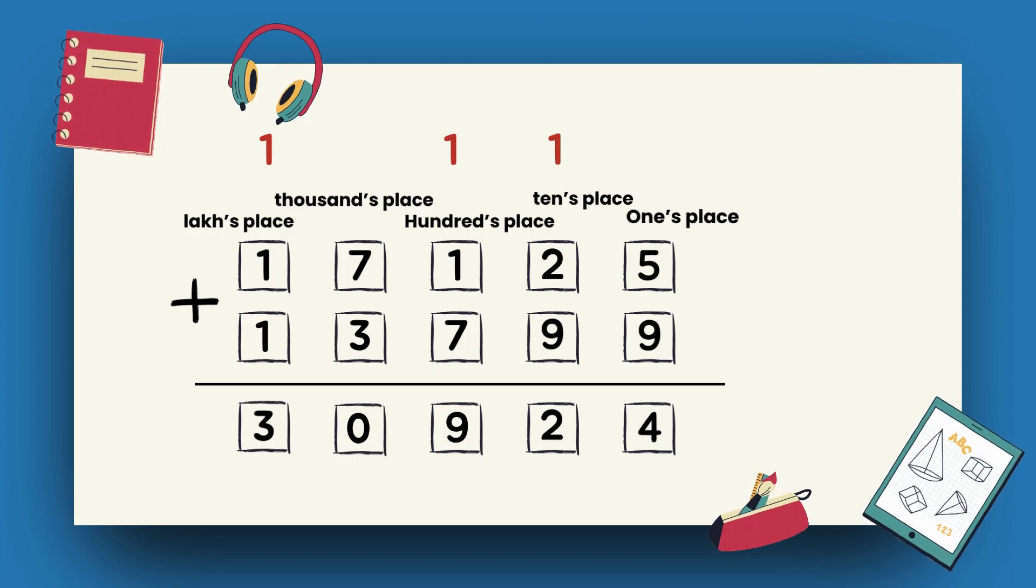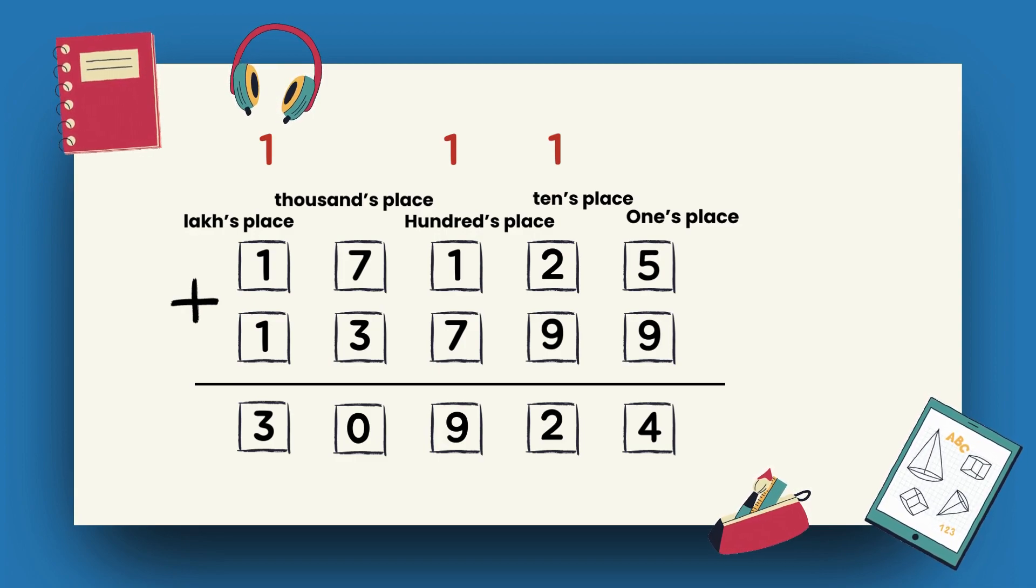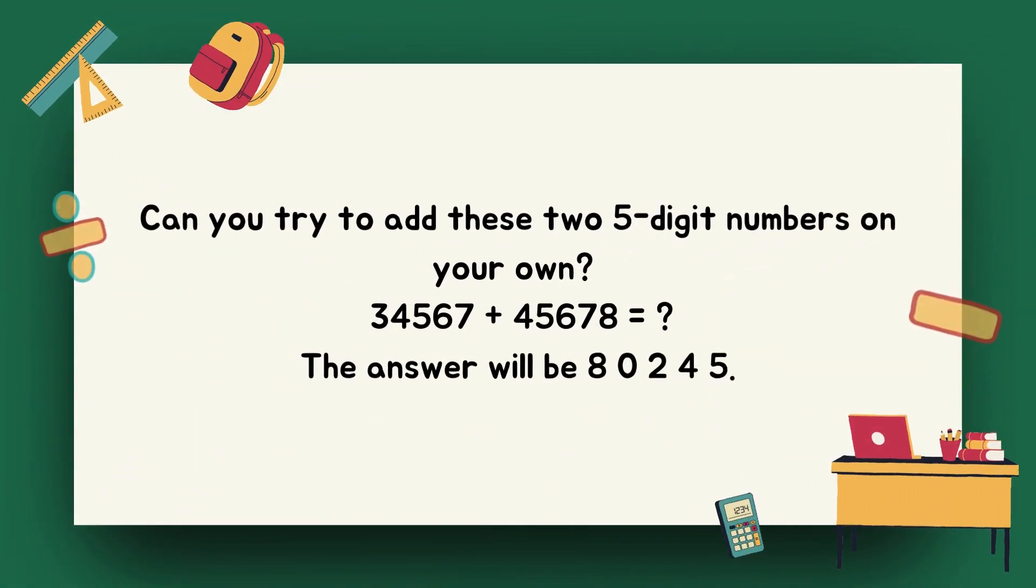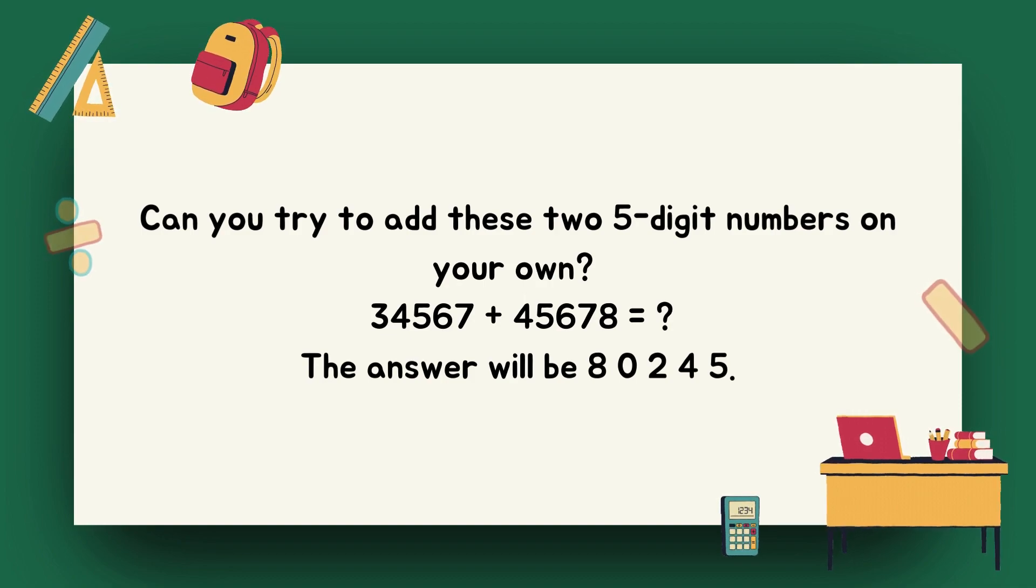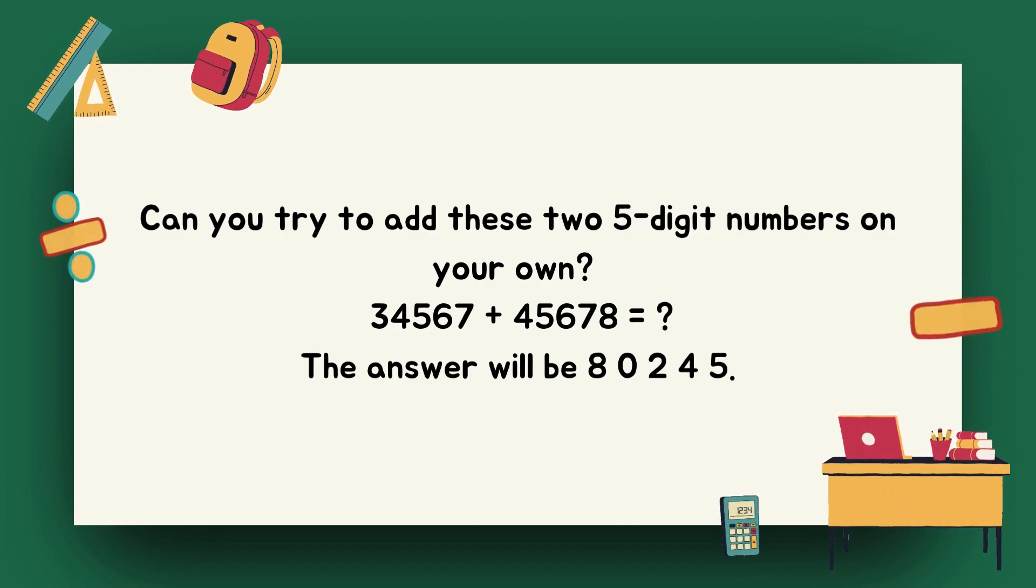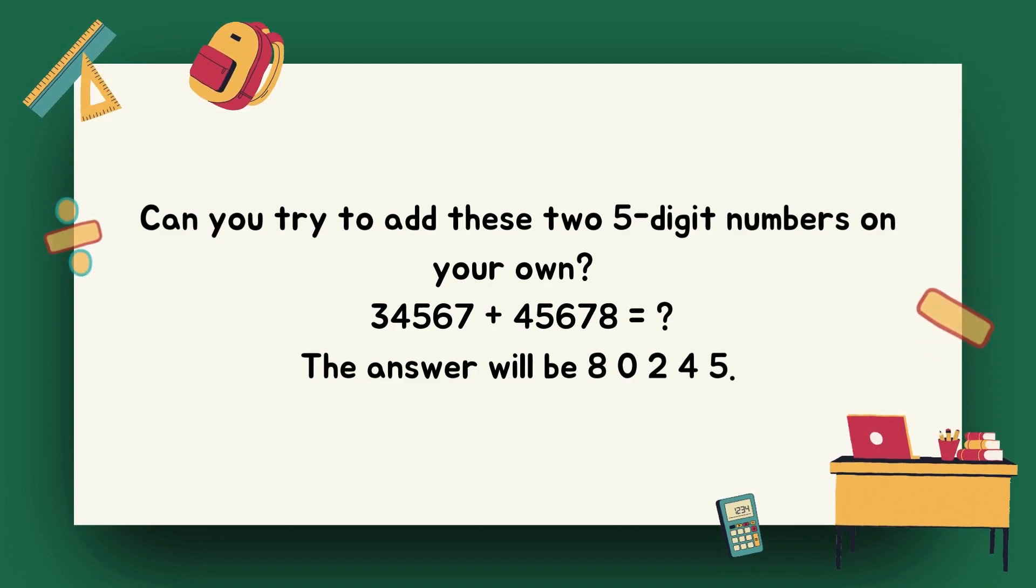Thus, 17125 plus 13799 is equal to 30924. Can you try to add these two 5-digit numbers on your own? 34567 plus 45678 is equal to? Answer will be 80245.